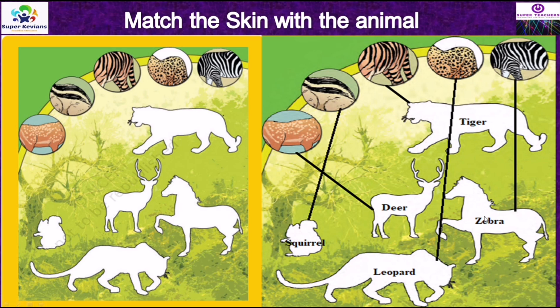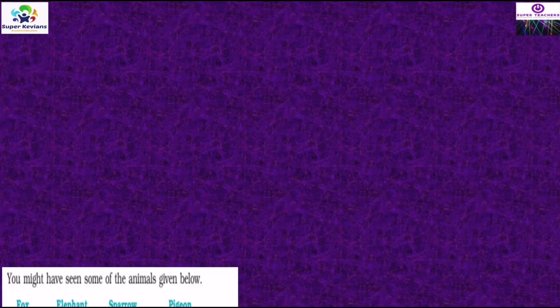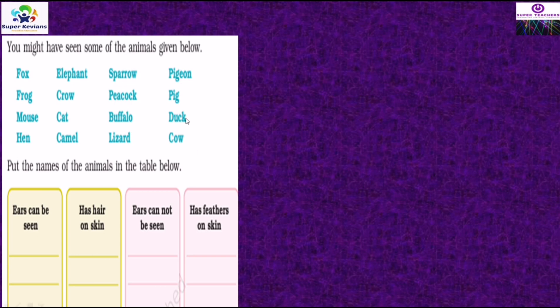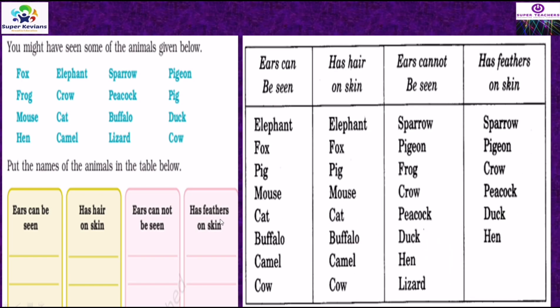You might have seen the animals in the list below: hawk, frog, mouse, hen, elephant, crow, cat, camel, sparrow, peacock, buffalo, lizard, pigeon, pig, dog, cow. You have to classify these animals into four parts: ears can be seen, has hair on skin, ears cannot be seen, and has feathers on skin. Animals whose ears can be seen: elephant, fox, pig, mouse, cat, buffalo, camel, cow. Animals that have hair on skin are the same group: elephant, fox, pig, mouse, cat, buffalo, camel, cow.